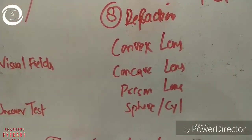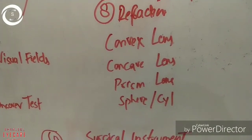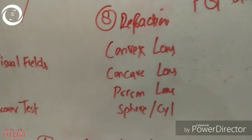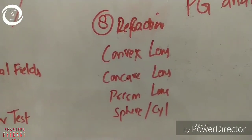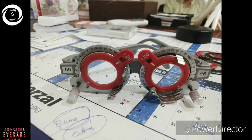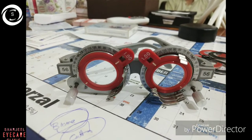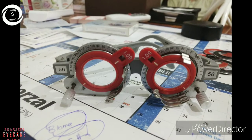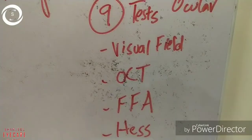The next station will be about refraction. You will be shown either a convex spherical lens, concave spherical lens, or cylindrical lens, and you have to identify them and state the identification points and uses in ophthalmology. Here we have shown you the cylindrical concave lens and its points of identification.